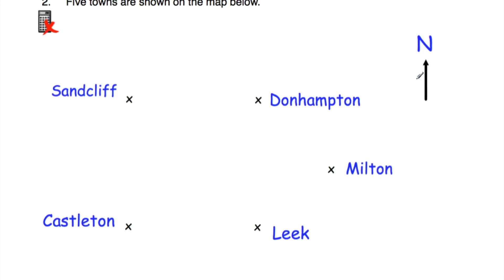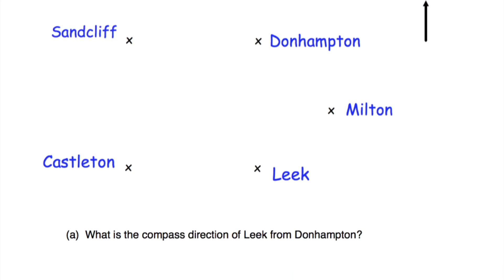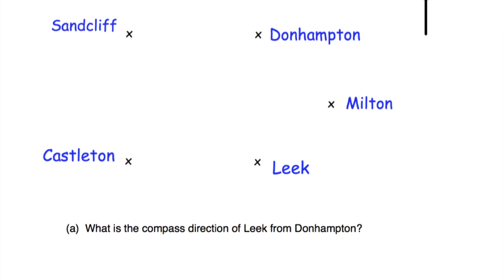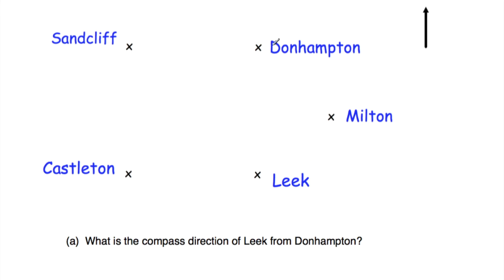Part A says what is the compass direction of Leake from Donhampton? So it says from Donhampton — we're in Donhampton — and we want to find the compass direction of Leake. If we're at Donhampton, we want to go down this way. Since north is up, that means down would be south, so it's going to be south.